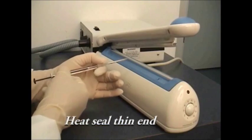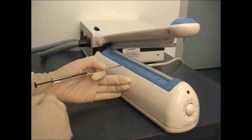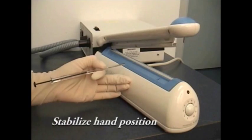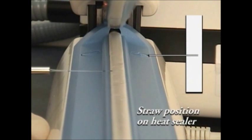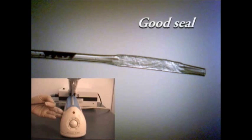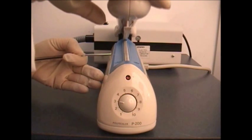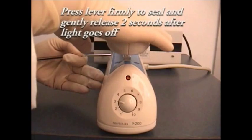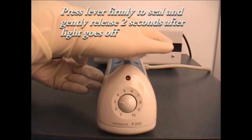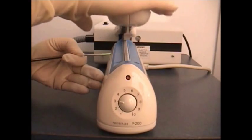Next, the thin end of the cryo tip is heat sealed followed by checking the seal under the microscope to confirm that the seal is good and is not broken. Then the stillet is pulled back and the thick side of the cryo tip is heat sealed in a similar fashion.